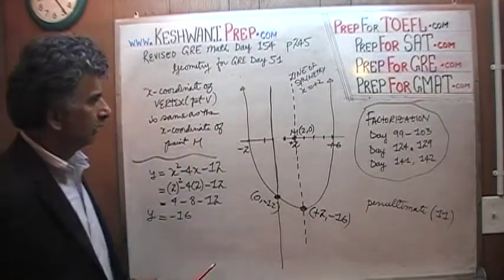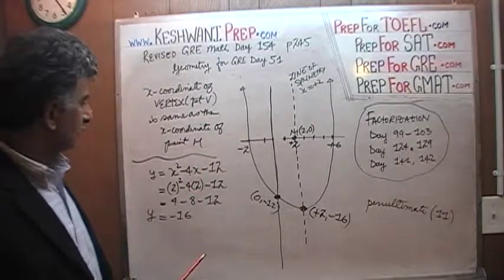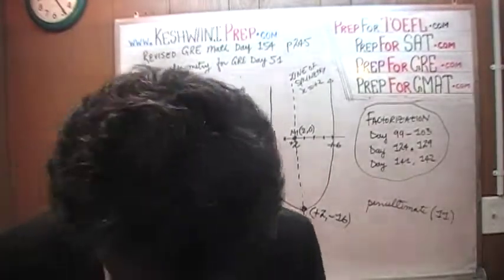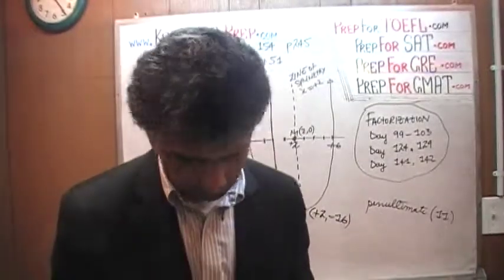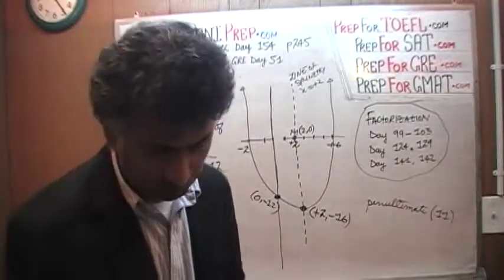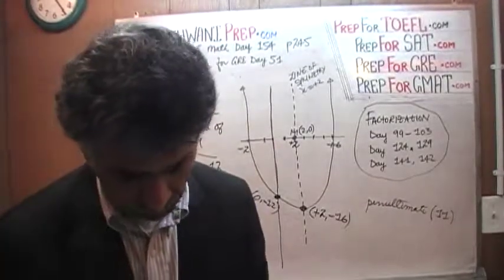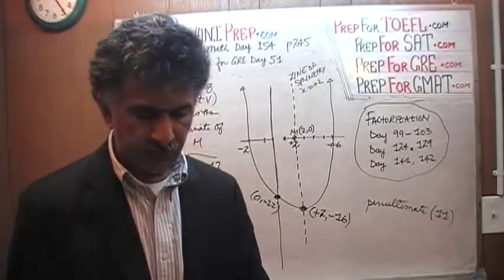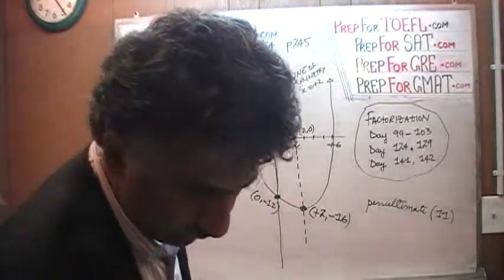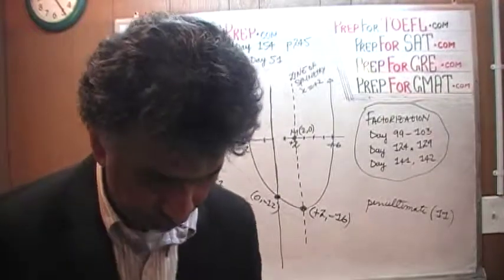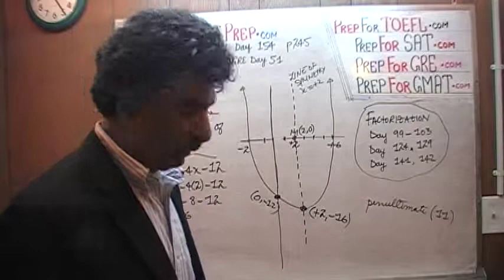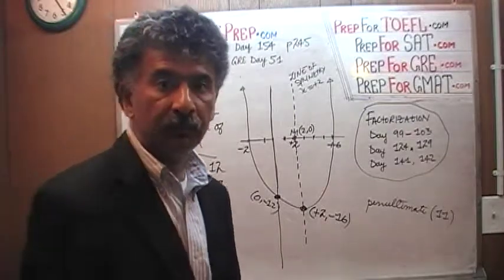The vertex is 4 units lower than the y-intercept, which was at negative 12. That is what our parabola looks like — we are done with question 19. There was quite a bit there. I will see you tomorrow where we will solve the last problem on this page, the one dealing with a circle. Bye now.